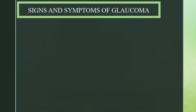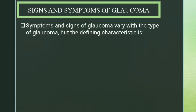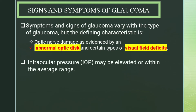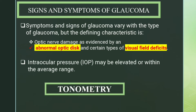The symptoms and signs of glaucoma vary with the type of glaucoma, but the defining characteristic is optic nerve damage. There will be evidence of abnormal optic disc and certain types of visual deficits. Intraocular pressure may be elevated or within the average range — it is not diagnostic on its own. The method used for measurement of intraocular pressure is tonometry.